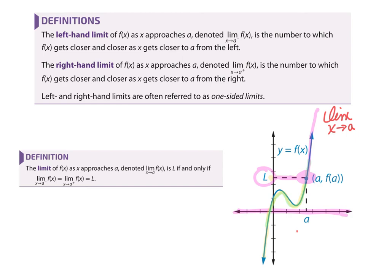If they are the same, they're approaching the same thing — just like with our piecewise function, where I plugged in border numbers to see if they were approaching the same thing, to see if it was continuous and would keep going. The limit is just asking: what is y doing as your horizontal movement gets close to a specific x value?